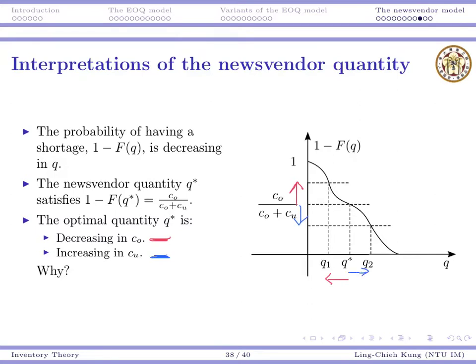Does that make sense? If your overage cost becomes higher, then you hate overage. Then when you hate overage, you will decrease your ordering quantity. So that there is a fewer probability for you to have overage. Or if we are having a larger underage cost, then we want to prevent underage. So we will order more.